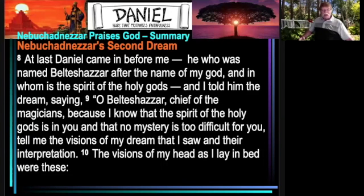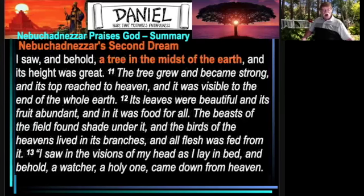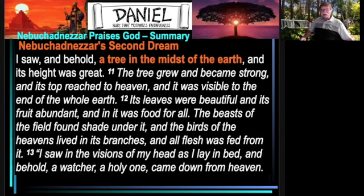'The visions of my head as I lay in bed were these: I saw and behold a great tree in the midst of the earth and its height was great. The tree grew and became strong and its top reached to heaven and it was visible to the end of the whole earth. Its leaves were beautiful and its fruit abundant, and in it was food for all. The beasts of the field found shade under it and the birds of the heavens lived in its branches. All the flesh was fed from it.'